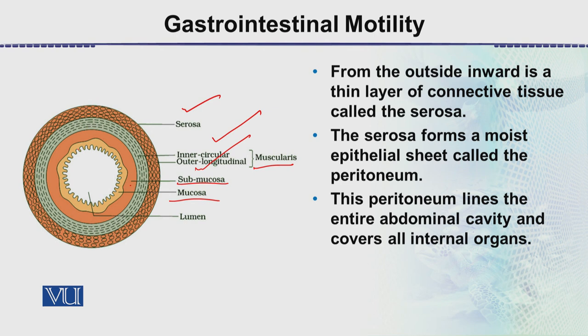This peritoneum lines not only the intestine — you can say it is the covering of the intestine, which we called the serosa. Along with this, it lines the body cavity as well. This peritoneum lines the entire abdominal cavity and covers all the internal organs — what we call the viscera.